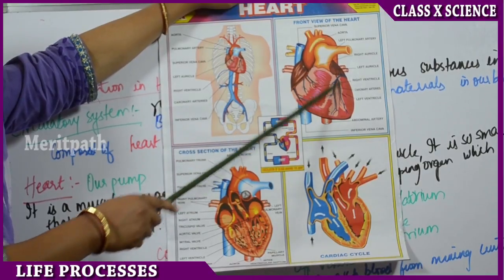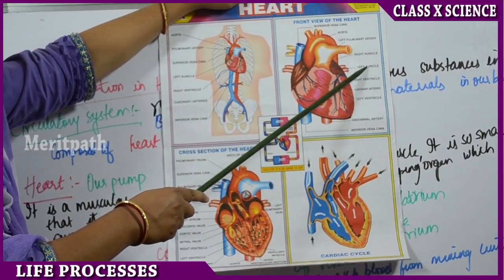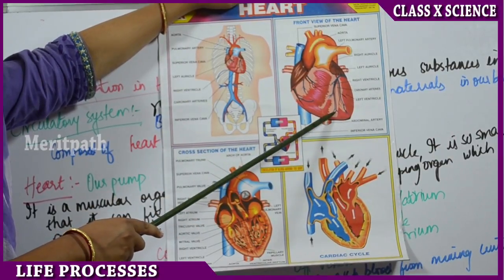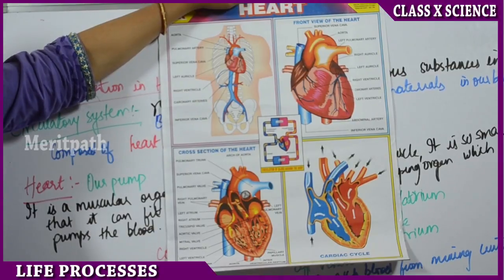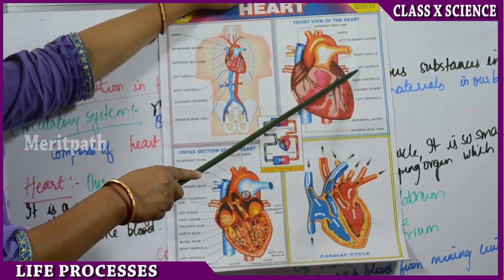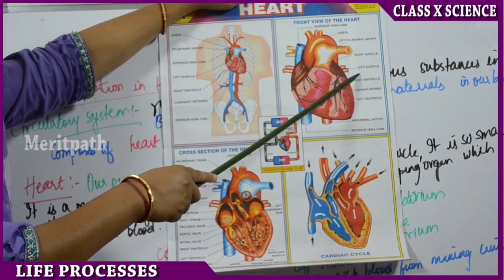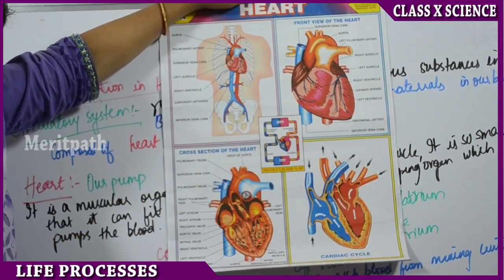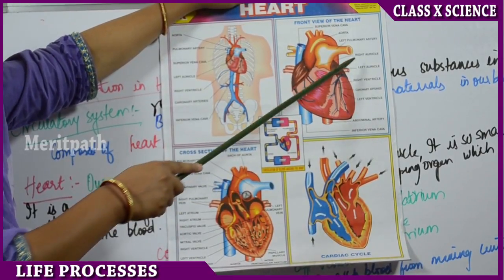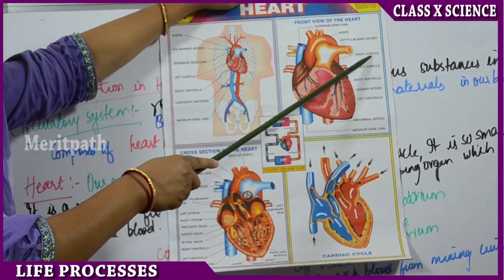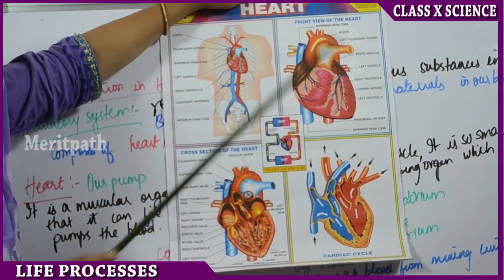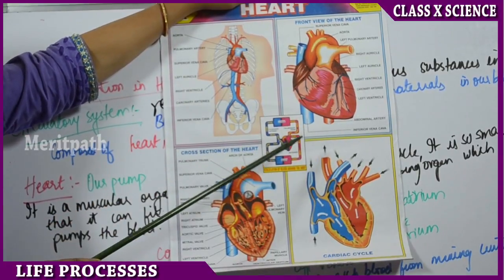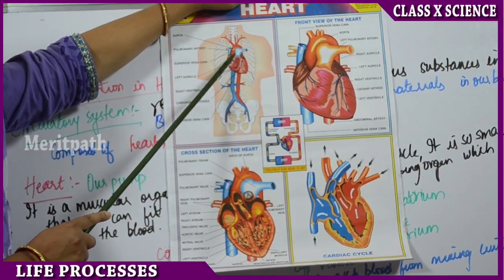The heart is divided into 4 chambers: left atrium, right atrium, right ventricle, and left ventricle. Oxygenated blood from the lungs reaches the left atrium, then goes into the left ventricle and is transported to all parts of the body. Deoxygenated blood reaches the right atrium, goes into the right ventricle, and then goes into the lungs for oxygenation. That is how the flow of blood occurs in the heart, which is located in the chest cavity.